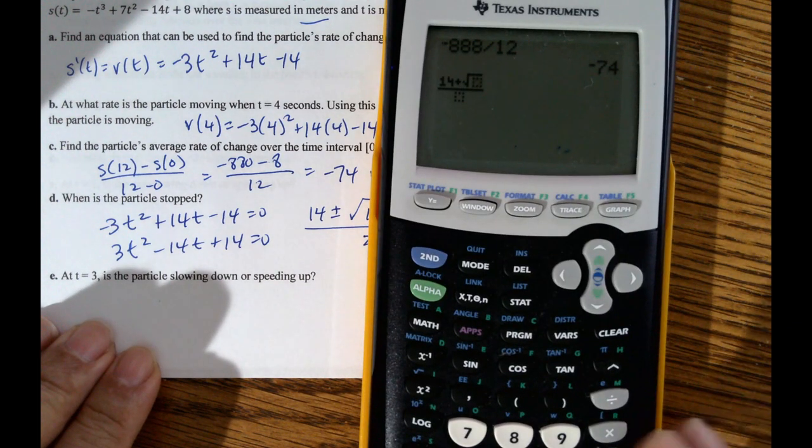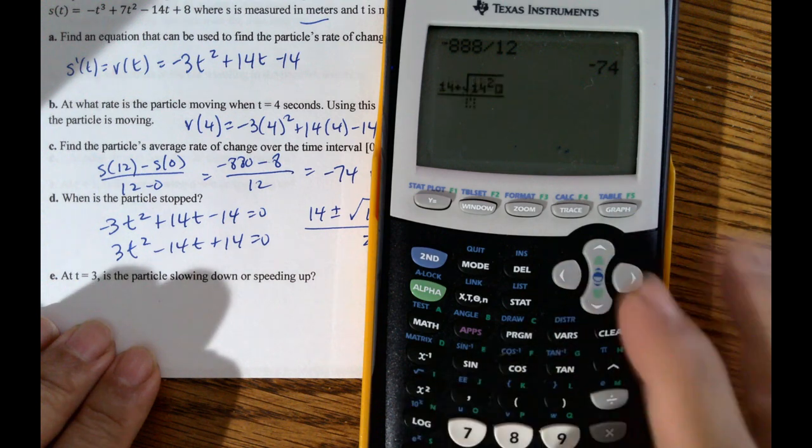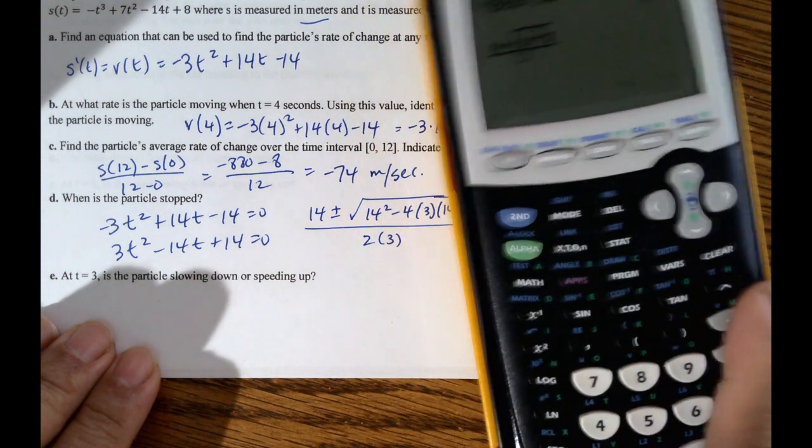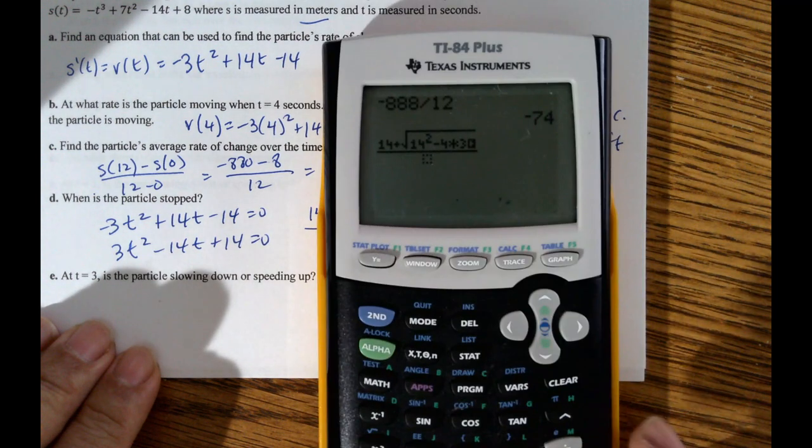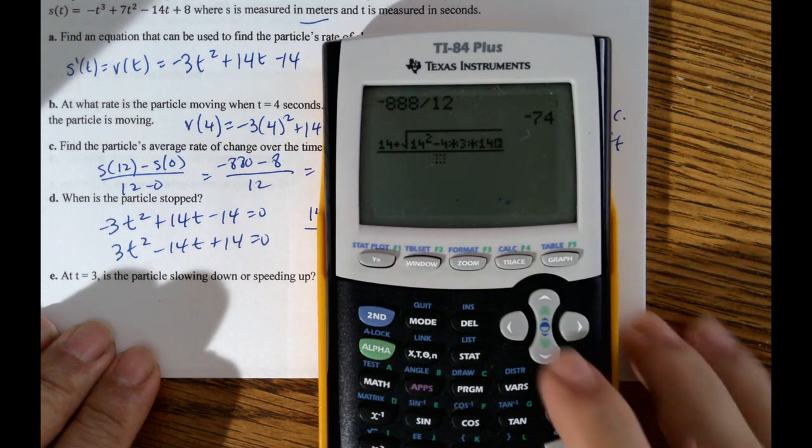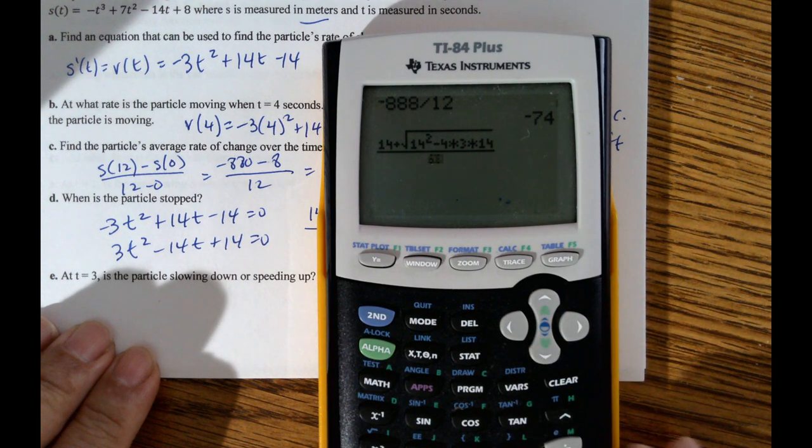Square root of 14 squared. I know that should be negative 14 squared, but what happens when you square a negative number? It just becomes positive, so it doesn't really matter. There's 4 times 3 times 14, all over 6. 2 times 3 is 6.